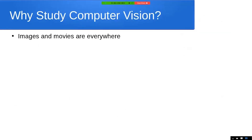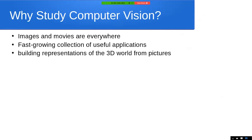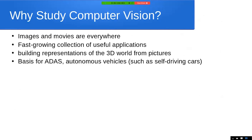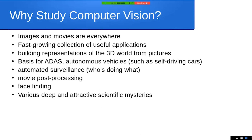Why study computer vision? Images and movies are everywhere — our cell phones are filled with more than we want to admit. There are lots of applications: reconstructing the 3D world from pictures, automotive advanced driving systems and autonomous vehicles where the car needs to see around itself, automated surveillance, movie post-processing, and face finding.